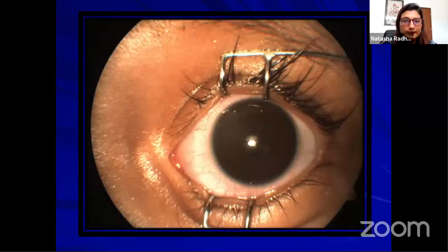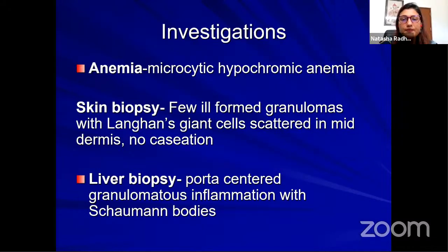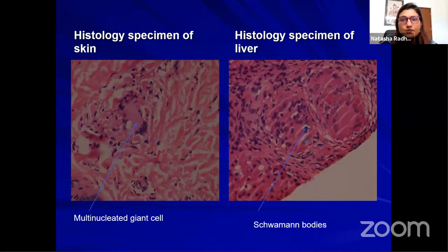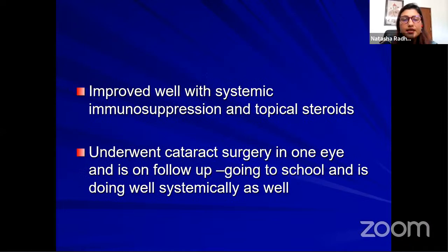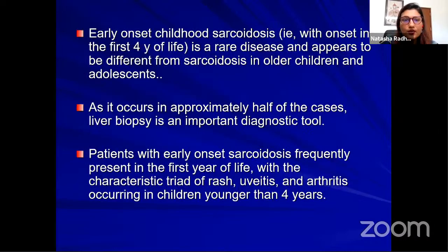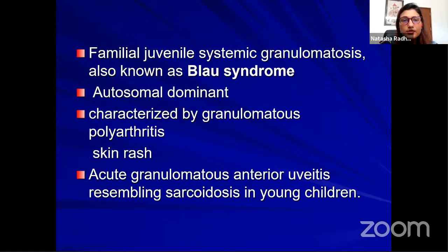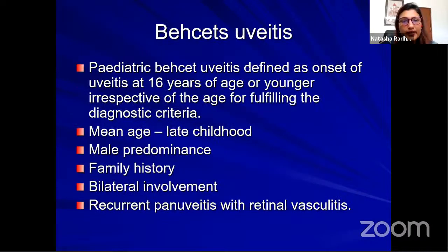Sarcoidosis in children can present with anterior uveitis, posterior retinal periphlebitis, or multifocal choroiditis. An unusual case: a 10-month-old female with abdominal distension, recurrent loose stools, failure to gain weight, depigmented hair, hypopigmented scaly skin lesions, and oral candidiasis. Ophthalmic examination showed bilateral anterior uveitis with festooned pupil. Skin biopsy showed ill-formed granulomas with Langhans giant cells, liver biopsy showed granulomatous inflammation with Schaumann bodies, and stool was positive for occult blood. Since the NOD2 gene mutation was negative, a diagnosis of infantile sarcoidosis was made.